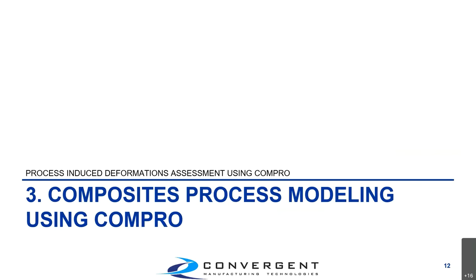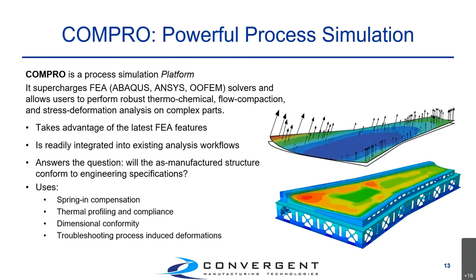Moving on to composite processing modeling using Compro. This describes how we use Compro to analyze the different areas of the process so we can ultimately predict the deformations of the part. Compro is basically a simulation platform. It supercharges commercially available finite element solvers such as Abaqus, Ansys, or open-source ones such as OpenFEM. It takes advantage of the latest finite element features and is very solver-agnostic — it sits in the background handling material properties and stays in step with the latest developments.